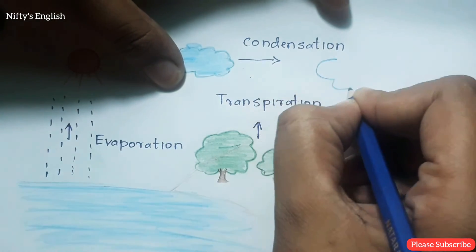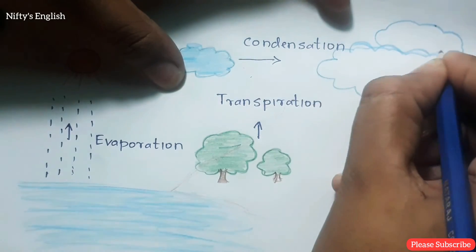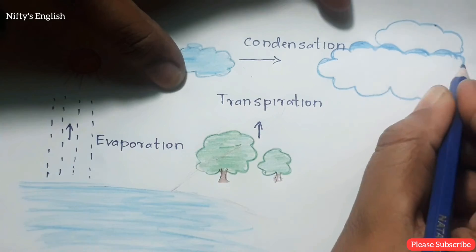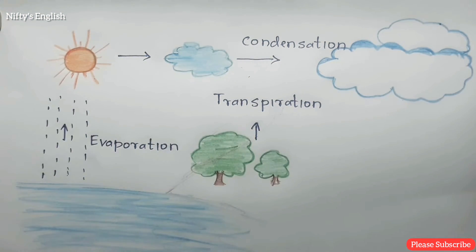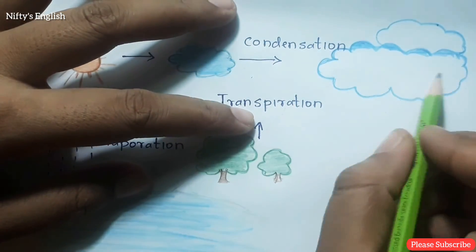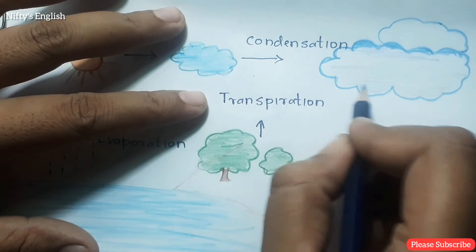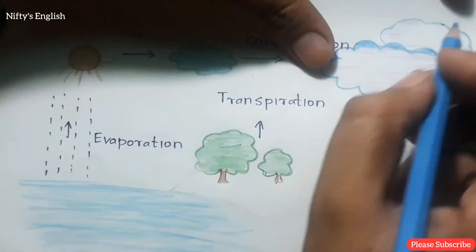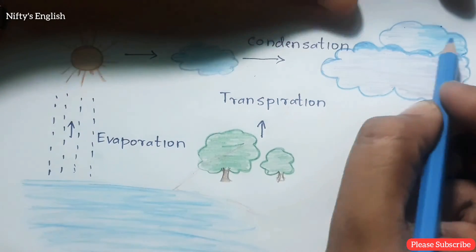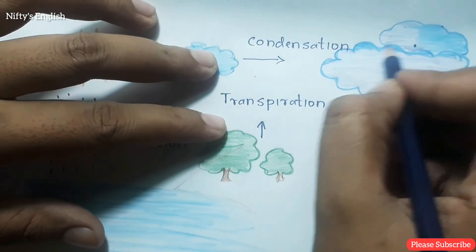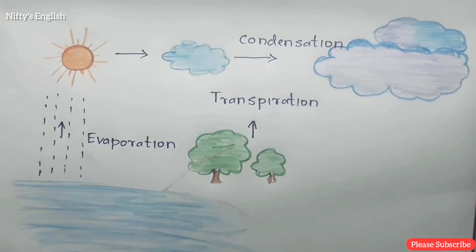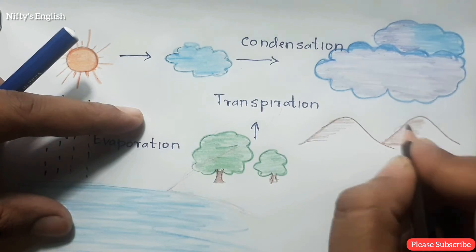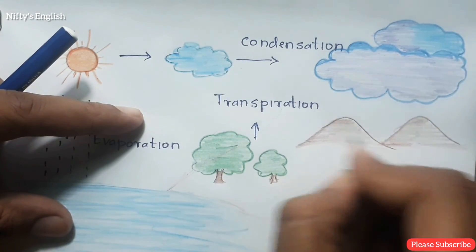One of the major processes of the water cycle is precipitation. As with evaporation and condensation, precipitation is a process. Precipitation describes any liquid or solid water that falls to earth as a result of condensation in the atmosphere. Precipitation includes rain, snow, and hail. It is one of many ways water is cycled from the atmosphere to the earth and oceans.